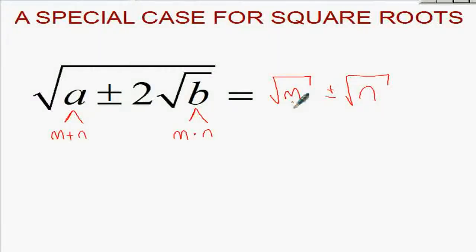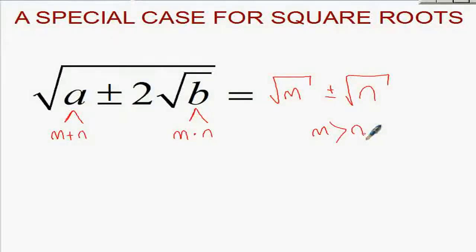When you write these two numbers M and N, you always need to use the bigger one first. There are four types of different questions where we can use this rule.